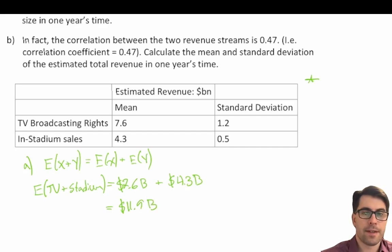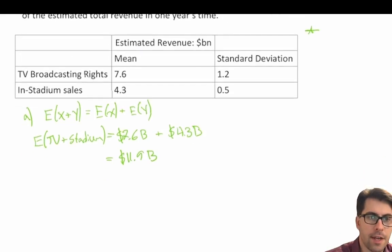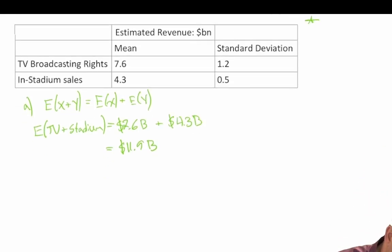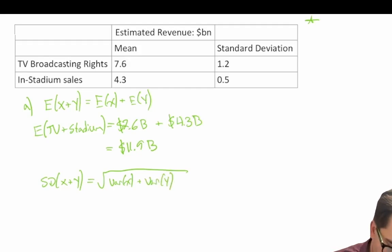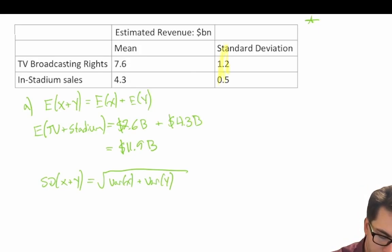Now let's find our standard deviation. Since they're independent random variables, the standard deviation of X plus Y is equal to the square root of the variance of X plus the variance of Y. We're not given the variance in this question, but we are given the standard deviations in the table, so we can derive our variance from those.